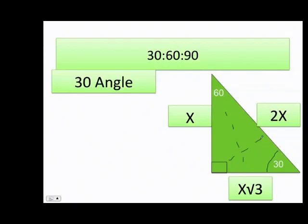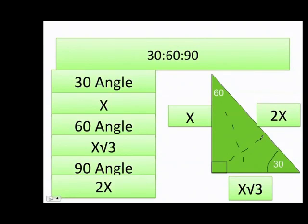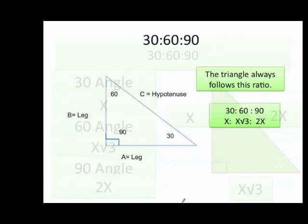Understanding that, if they give me the value of x, I can go ahead and find the value of the 30-degree side, the value of the 60-degree side, and the value of 2x, which is the 90-degree angle. Let's see what that means.